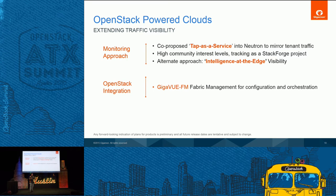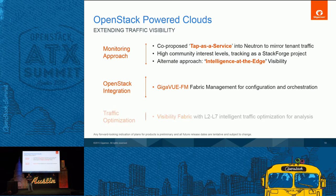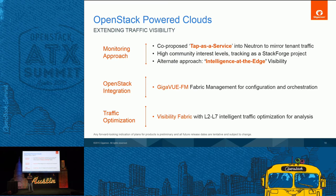Once you have that, you need orchestration — how do you integrate with OpenStack itself? Our centralized orchestration layer integrates with OpenStack to configure these traffic policies. That traffic, once captured from the virtual infrastructure, can be optimized by our visibility fabric nodes before being delivered to the tools. It's an intelligence-at-the-edge layer with a traffic optimization layer, giving a holistic solution for scale and reach.